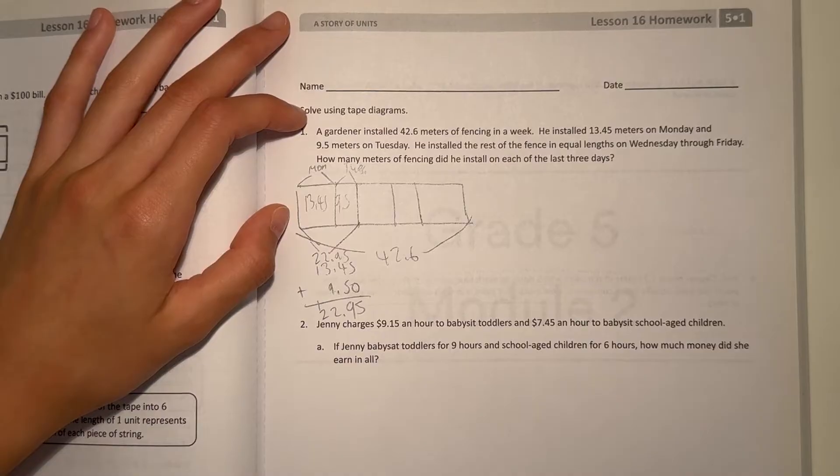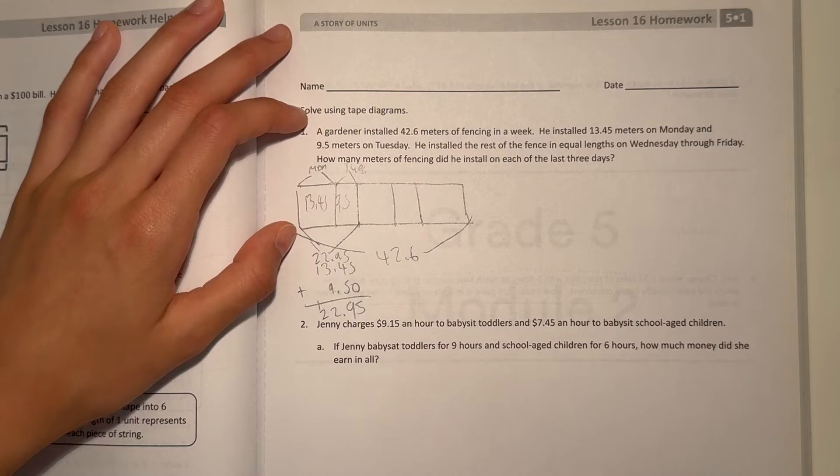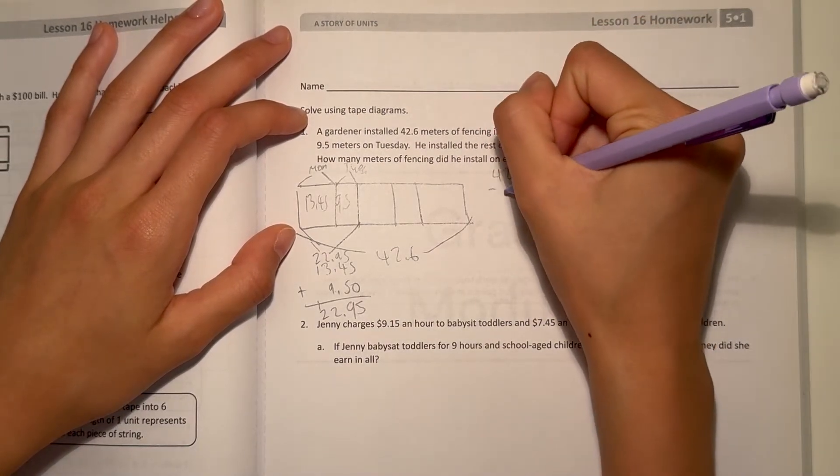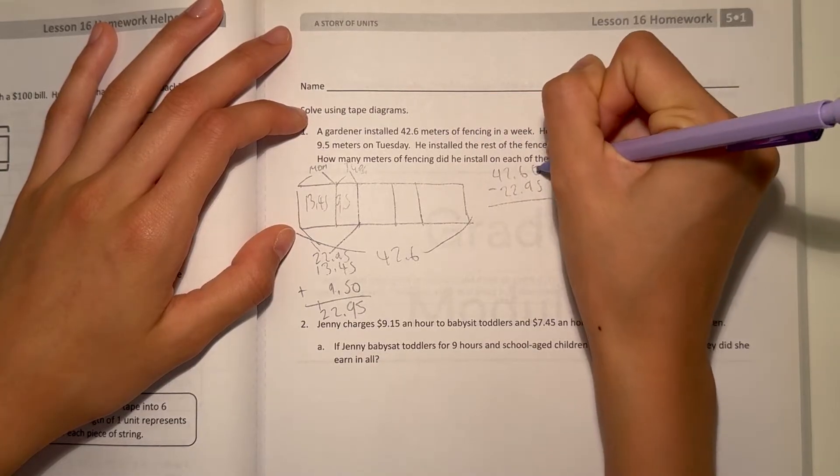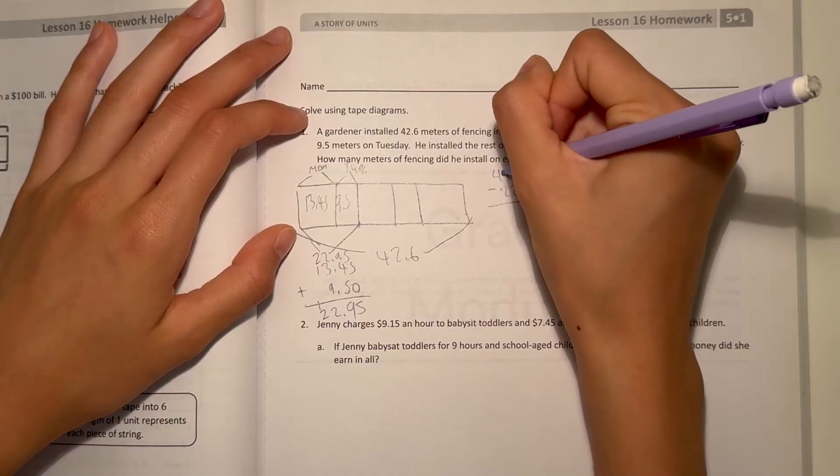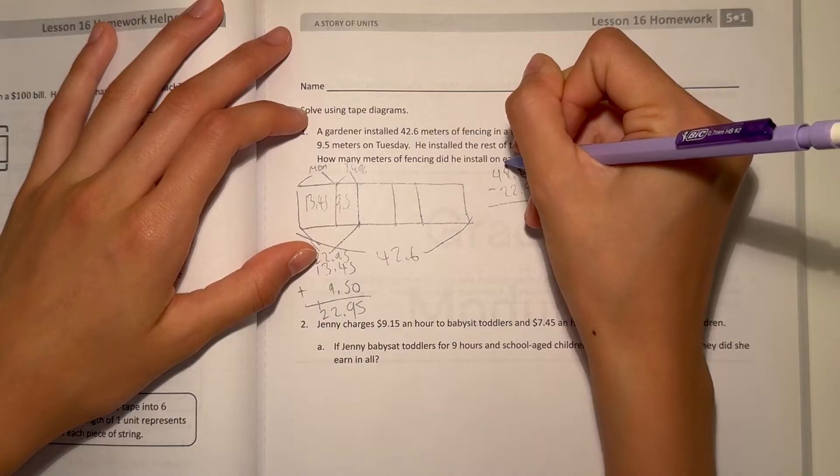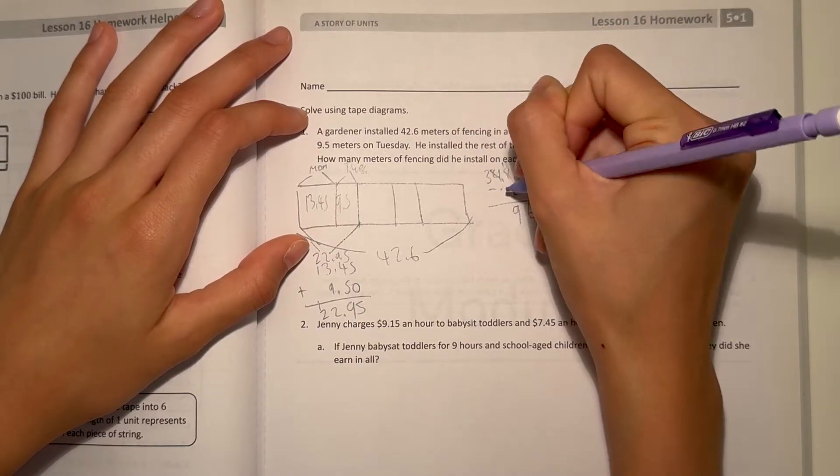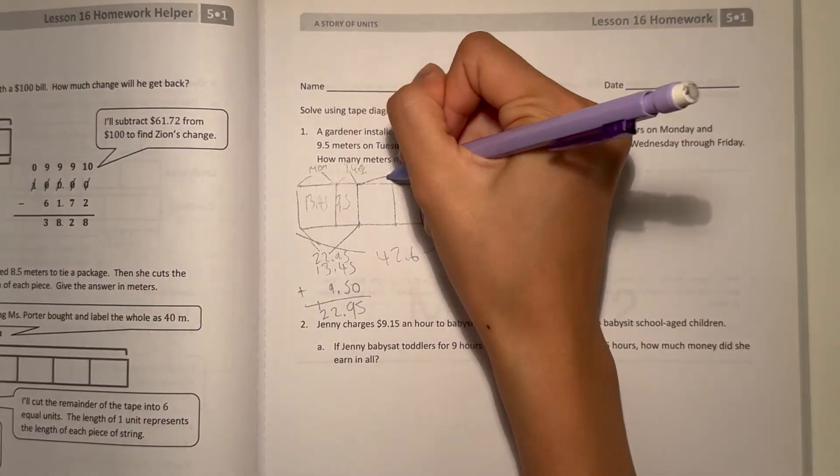Now we have to find out how many is left for the gardener to install Wednesday through Friday. So we have 42.6 minus 22.95. 0 minus 5 borrow 10, 10 minus 5 is 5, 5 minus 9 becomes 15 minus 9 which is 6, 1 minus 2 borrow 10, 11 minus 2 is 9, and 3 minus 2 is 1.